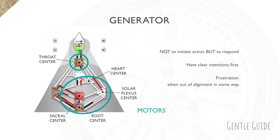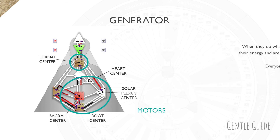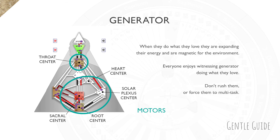You can help a Generator by asking them questions that can be answered by yes or no. This process, along with following their authority, should be how they move forward — from the moment they engage in an activity to every following step until they finalize it. When they aren't following their strategy to respond, they will get frustrated — this is a sign they are out of alignment. When they do what they love, they expand their energy and are magnetic to their environment.